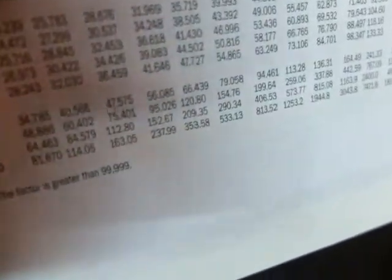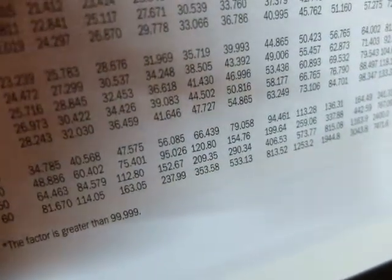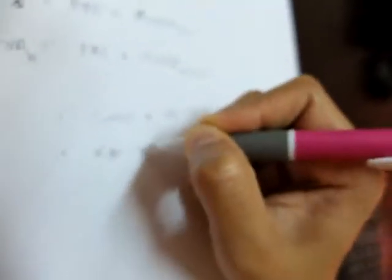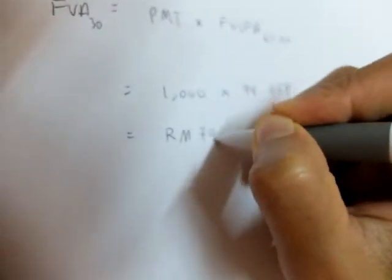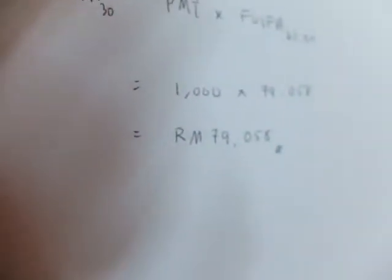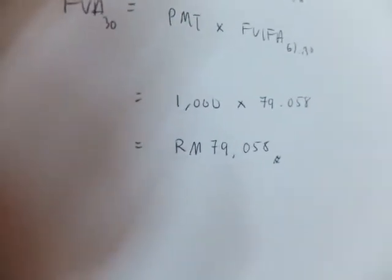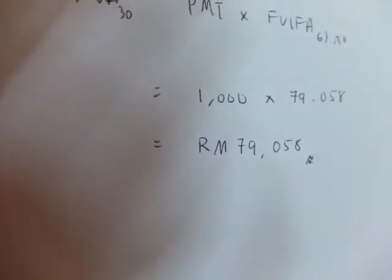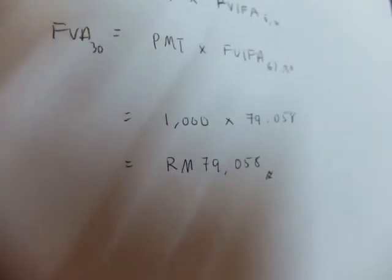That's 10%, 30 years... 79.058, which equals to 79,058 ringgit. So that is your value, I mean, or at least Serena's investment value when she reaches 55.